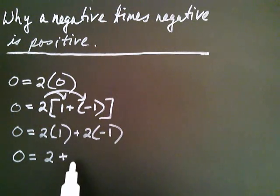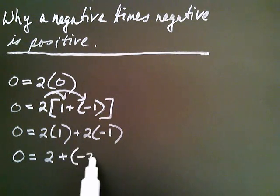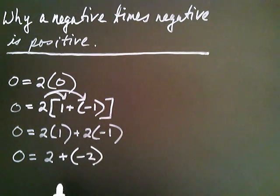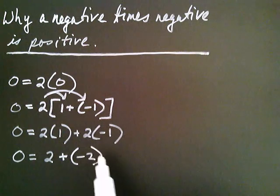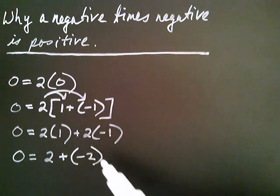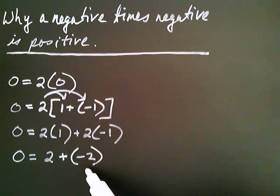So let me write negative two right here. The reason that's significant is because two multiplied by negative one is equal to negative two.